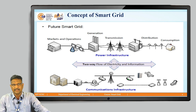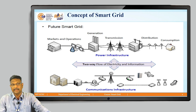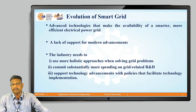In this figure, there are two diagrams: one is a power infrastructure and the other is a communication infrastructure. In the smart grid power infrastructure, there is a two-way flow of electricity and information, with communication infrastructure involving remote terminal units. Load centers and data centers are continuously involved in the communication process, enabling an uninterrupted power supply.